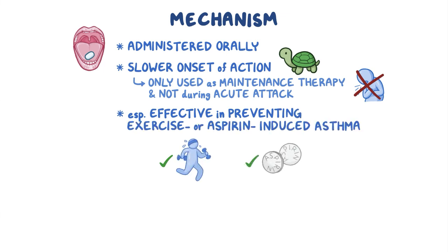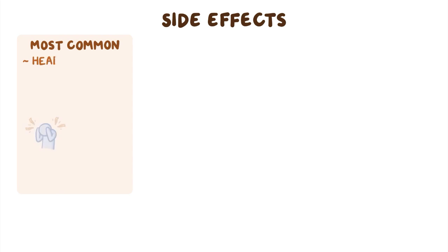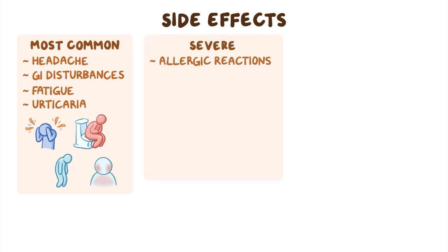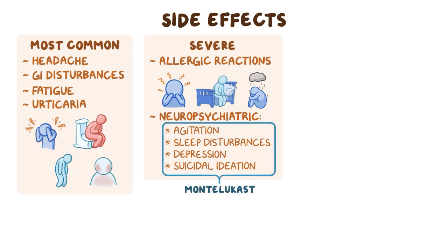However, leukotriene modifiers can have side effects. The most common side effects are mild and nonspecific, such as headache, gastrointestinal disturbances, fatigue, and a skin rash. However, they can also lead to severe allergic reactions, as well as neuropsychiatric effects like agitation, sleep disturbances, depression, and suicidal ideation. Montelukast has a boxed warning for these neuropsychiatric events.